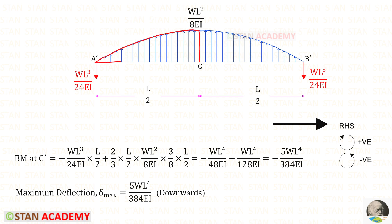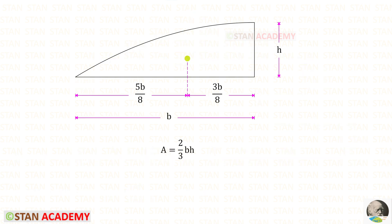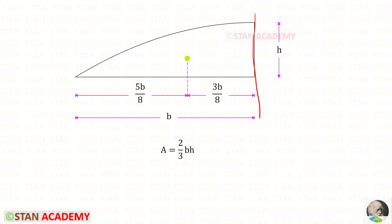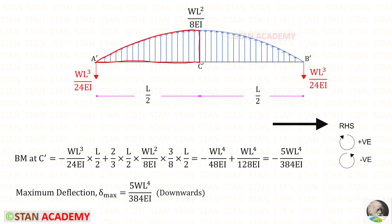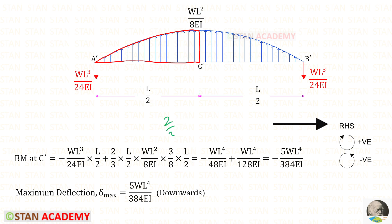For this load we have to multiply the area with the centroid distance up to the center. We have the half parabola. Let us keep the breadth of the parabola as b and the height as h. The area formula is (2/3)bh. The centroid distance towards the right is 3b upon 8 and towards the left is 5b upon 8. We are finding the moment about C'; the centroid distance is (3/8) × (l/2), and the area is (2/3) × (l/2) × h.